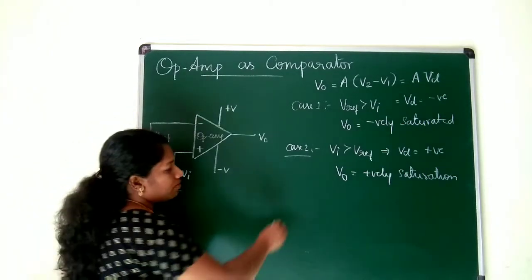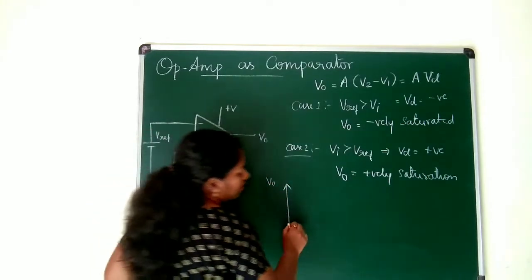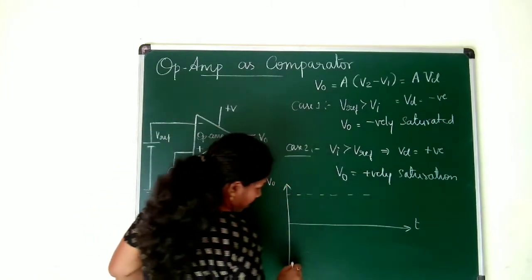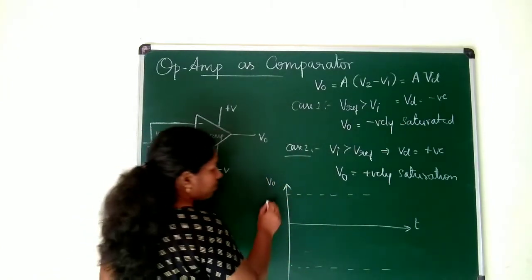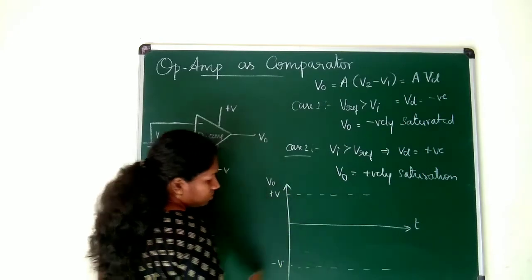Let's write that in the waveform. See here this is V0 I write with respect to time. And power supply which is taken as ideal power supply value plus V volt and this is minus V volt.